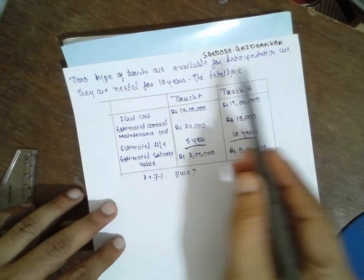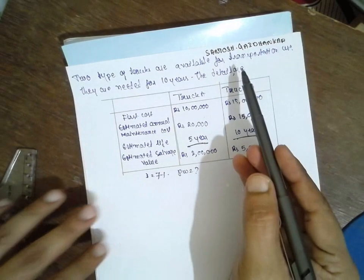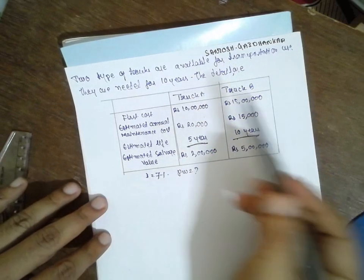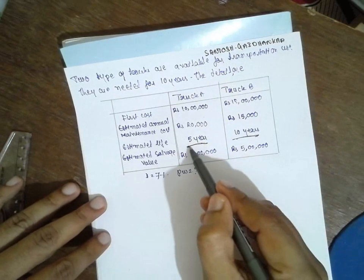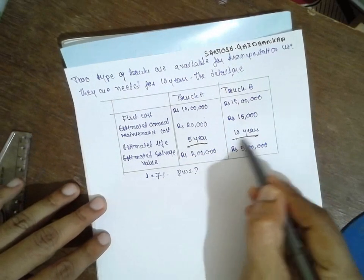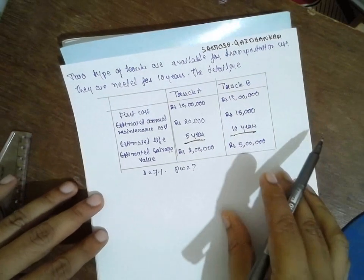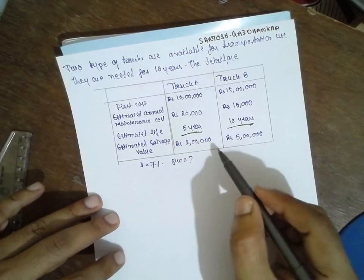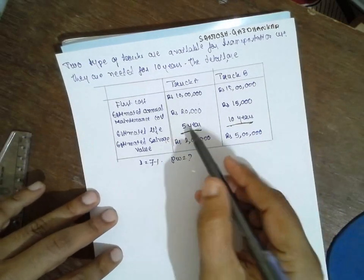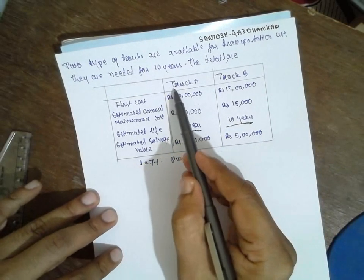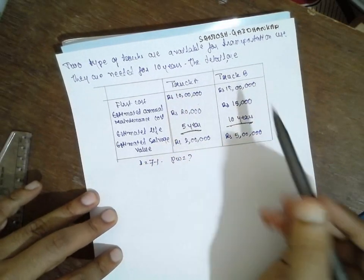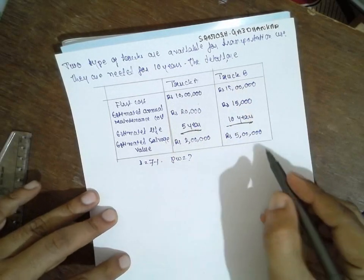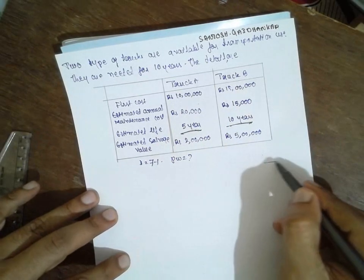I am Suddush Gaydankar. Today I am explaining about the economic part when the lives are different. Till now we have discussed about the same equal life; this is the unequal life. There are two trucks A and B. We have to find out the present worth based upon the LCM method.